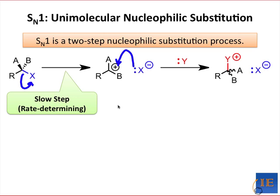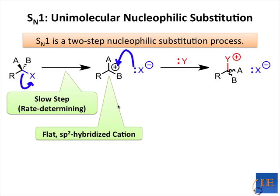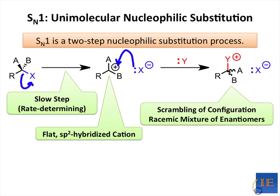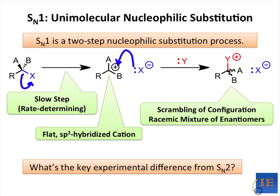The cationic intermediate that forms is flat and SP2 hybridized. This implies that the configuration of the product will be scrambled. We'll get equal amounts of a compound with A up and B down, and a compound with B up and A down. What's the key experimental difference from SN2 here?